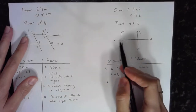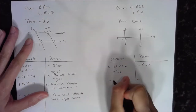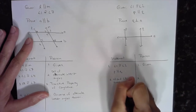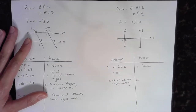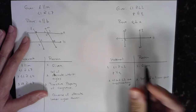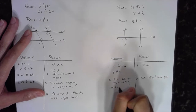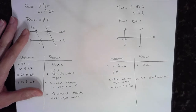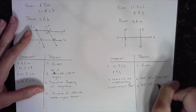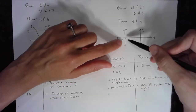Since angles one and two are congruent and form a linear pair — they create a straight line — they must be supplementary. So I write: angle one and angle two are supplementary, and the reason is the definition of a linear pair. A linear pair means the two angles add up to 180 degrees. Then I can write: measure of angle one plus measure of angle two equals 180 degrees, and the reason is the definition of supplementary angles.